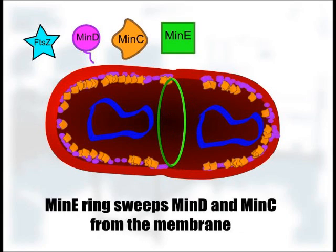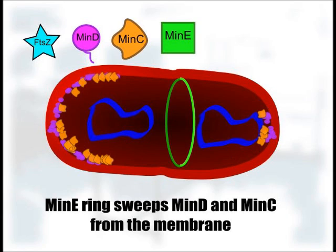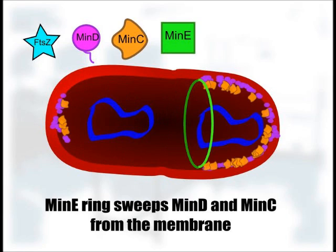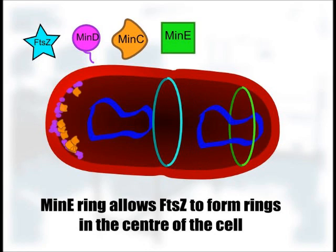Then there's a final member of this group, MinE, which forms a chain that chucks MinD out of the membrane, causing it to break away from MinC. A ring of MinEs goes up and down the cells, breaking off these interactions as they form. The middle of the cell is generally swept clean of MinC, allowing space for the FtsZ to form chains.